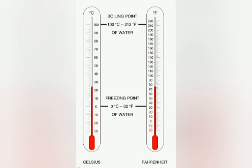On the other hand, in Fahrenheit scale the lower fixed point is 32 degree Fahrenheit. The upper fixed point is 212 degree Fahrenheit. The length of the thermometer between the lower fixed point and upper fixed point is divided into 180 equal parts.